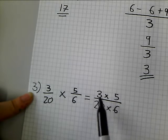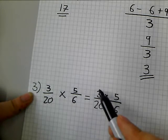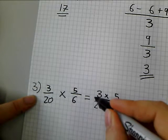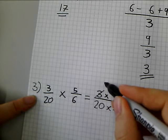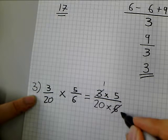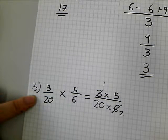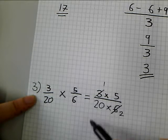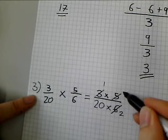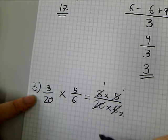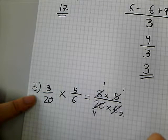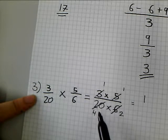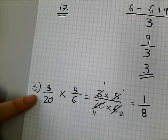So I notice this 3 and this 6 can be divided by 3. So I'm going to divide this by 3. 3 divided by 3 is 1. I'm going to divide this by 3. 6 divided by 3 is 2. I can do the same with this 5 and this 20. What goes into 5 and 20? 5 does. So I'm going to divide this by 5. 5 divided by 5 is 1. I'm going to divide this by 5. 20 divided by 5 is 4. I can now multiply my new numbers. So 1 times 1 equals 1, and then 4 times 2 is 8. So my answer is an eighth.